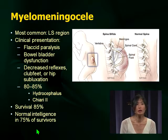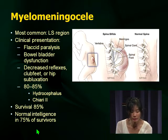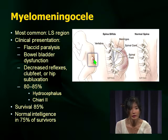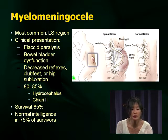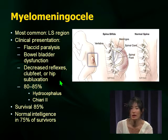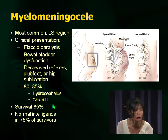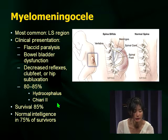Myelomeningocele is a defect in the covering of the spinal cord with exposure and infection risk. The important thing for examination purposes is associated findings — examiners will give you a scenario and ask what a problem might be associated with. Remember hydrocephalus and Chiari 2 malformations are associated with myelomeningocele. We'll go over Chiari malformations later — just remember it's hydrocephalus and Chiari 2, not Chiari 1.